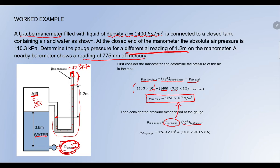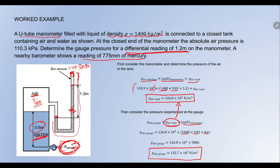We already know the tank pressure we just calculated. The pressure due to water is rho × g × h, where rho = 1000 for water — not 1400, which is the gray liquid — times g = 9.81, times the height of the water column h = 0.6 m. Substituting all values, the absolute pressure at the gauge is 132.7 × 10³ Pa.